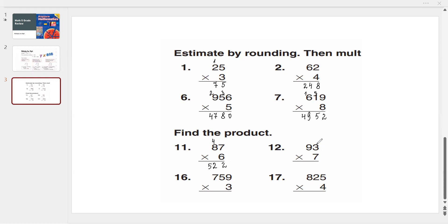Then 759 times 3. 3 times 9 is 27: write 7, 2 above. 3 times 5 is 15, plus 2 is 17: we write 7, and 1. Then 3 times 7 is 21, plus 1 is 22.